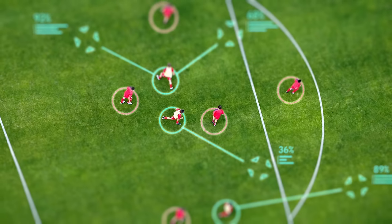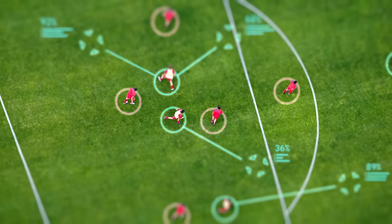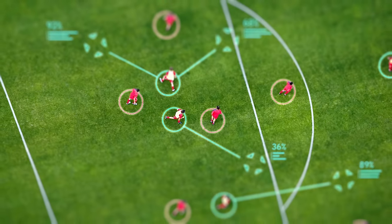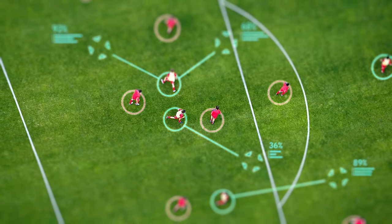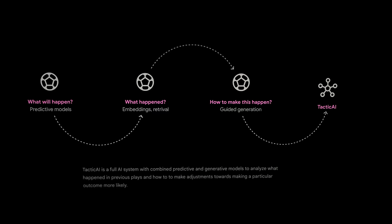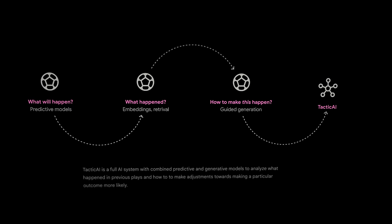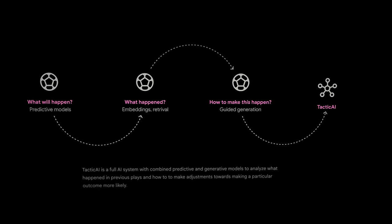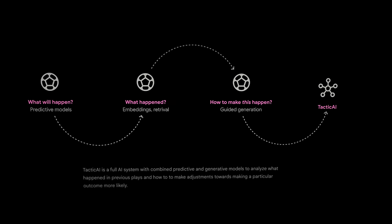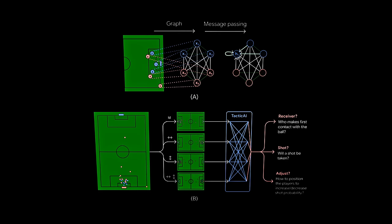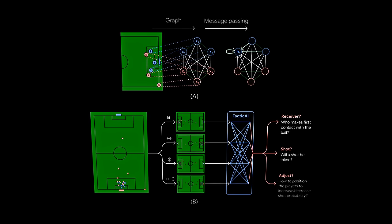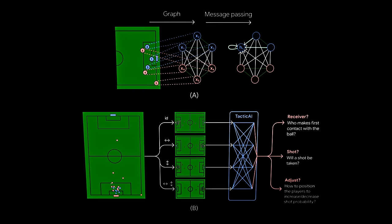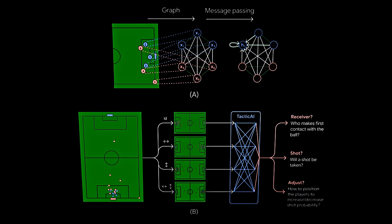Petar said that identifying key patterns of tactics implemented by rival teams and developing effective responses lies at the heart of modern football. However, doing so algorithmically is still wide open in terms of research. TacticAI incorporates both a predictive and generative component, allowing coaches to effectively sample and explore alternative player setups for each corner kick and to select those with the highest predicted likelihood of success. Corner kick situations are represented as graphs, with players as nodes and their relationships as edges, allowing modelling of interactions between players — which may be more important than absolute distances. This is using geometric deep learning.